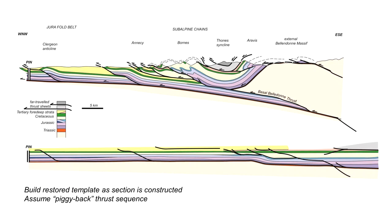The key element here is that we will build the restored template as the cross-section itself is drawn. In doing this, we assume a so-called piggyback thrust sequence, meaning deformation migrated from the mountainward side on the right towards the foreland on the left. When restoring the cross-section we work back in time, starting by restoring the most recent structures, which are interpreted to lie on the left in the Jura fold belt.